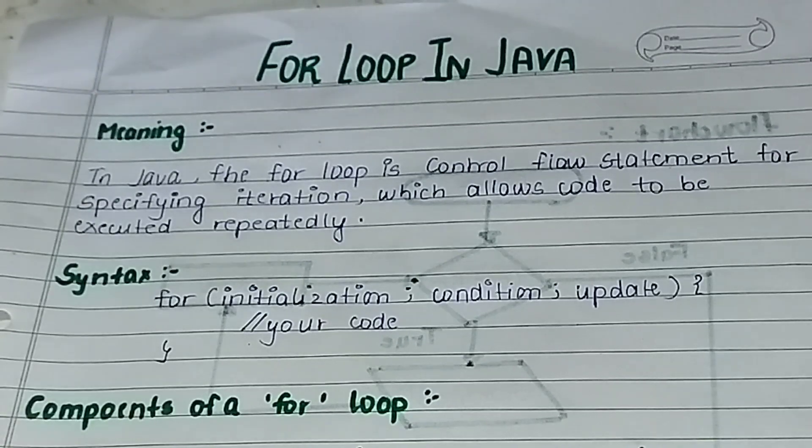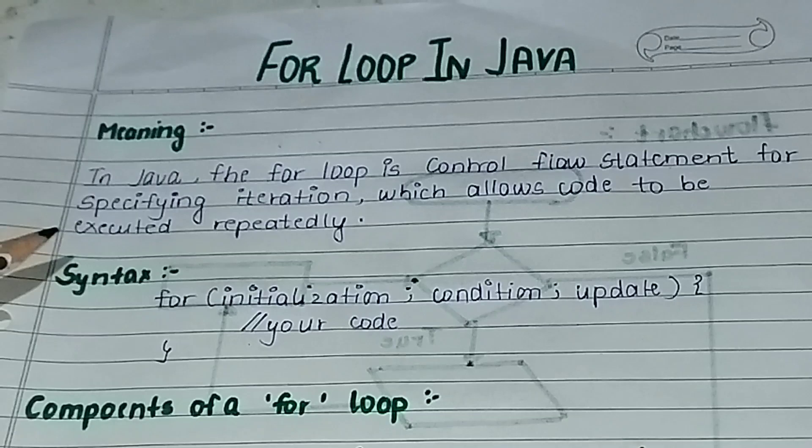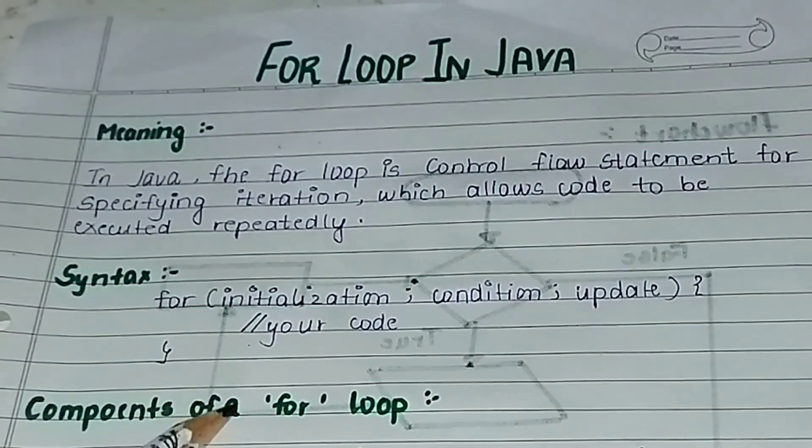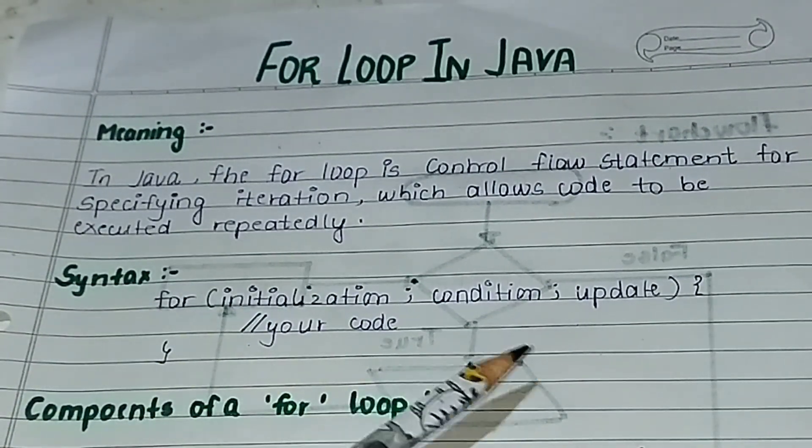So we'll look at for loops. First let's see the meaning. In Java, the for loop is the control flow statement for specifying iteration which allows code to be executed repeatedly. So we use for loop when we want to run something for a specific number of iterations. The syntax is: for (initialization; condition; update)